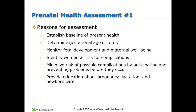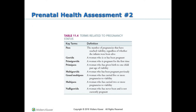The first prenatal health assessment. Terms related to pregnancy status include: PARA, the number of pregnancies that have reached viability regardless of whether the infant were born alive. Gravida, a pregnant woman, often used with a number to indicate the number of pregnancies a woman has had. Primigravida, a woman who is or has been pregnant. Primipara, a woman who has given birth to one child past the age of viability.